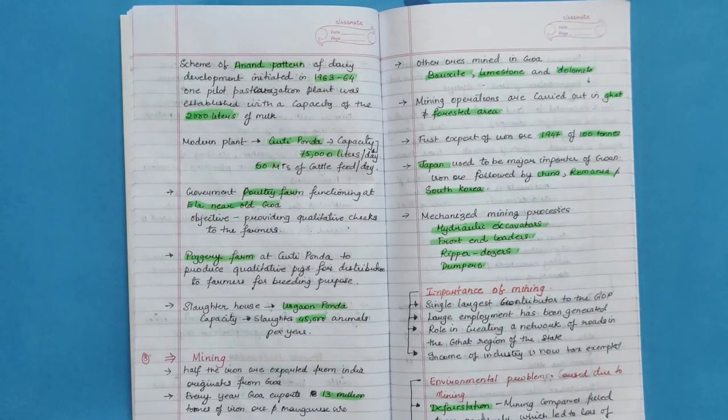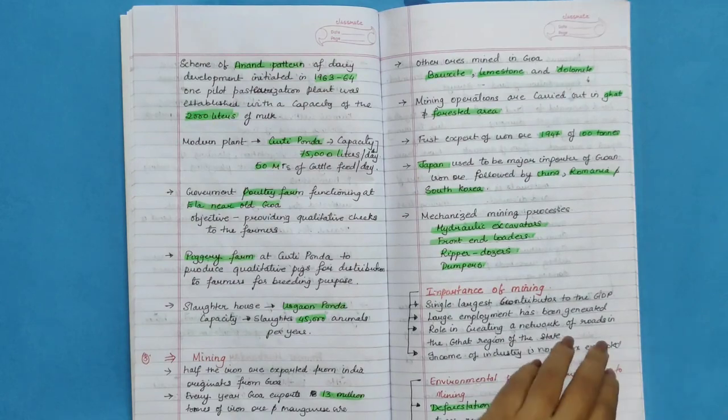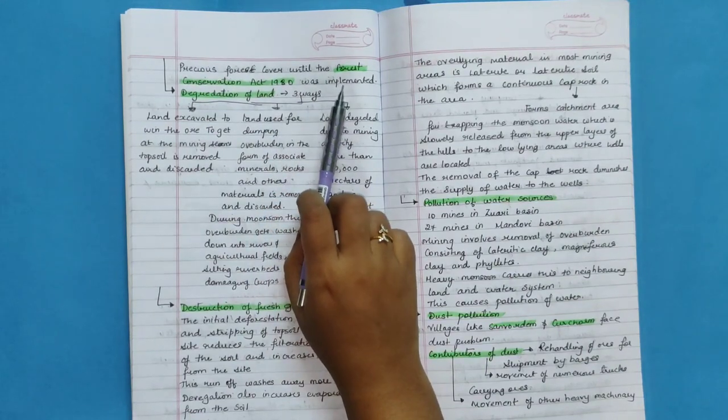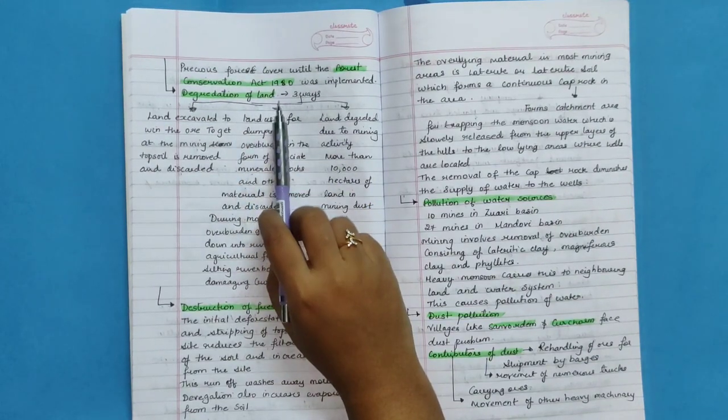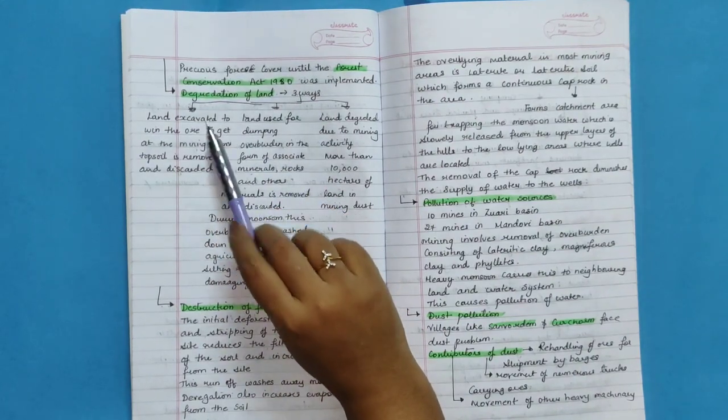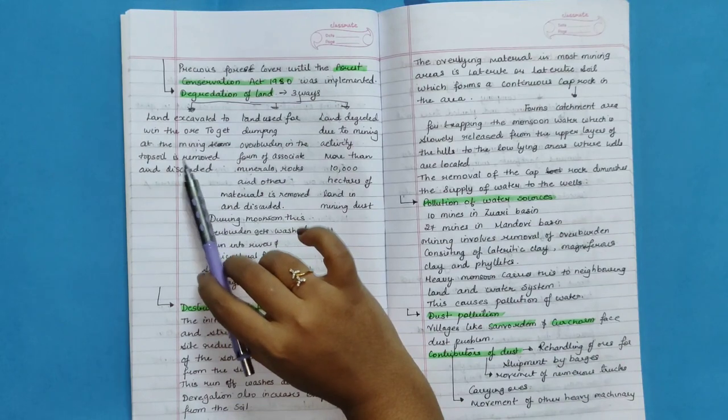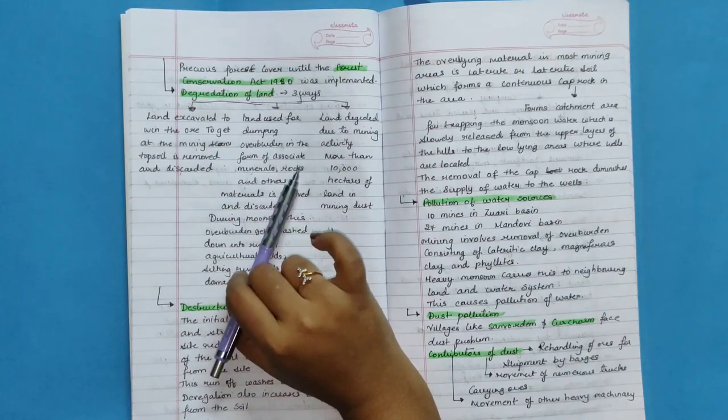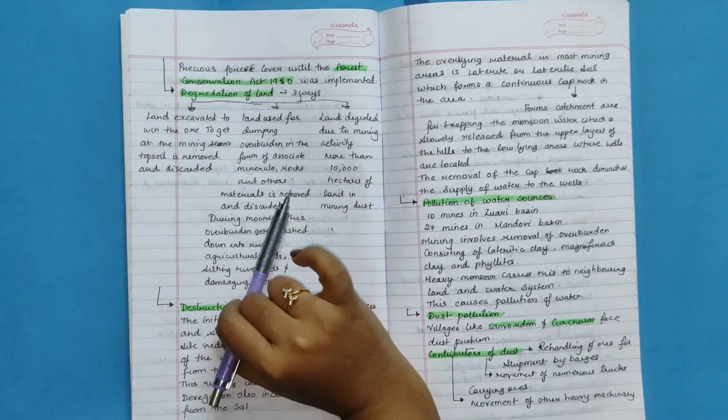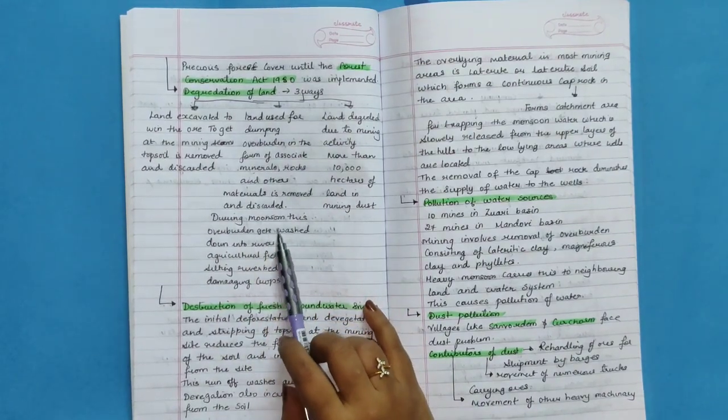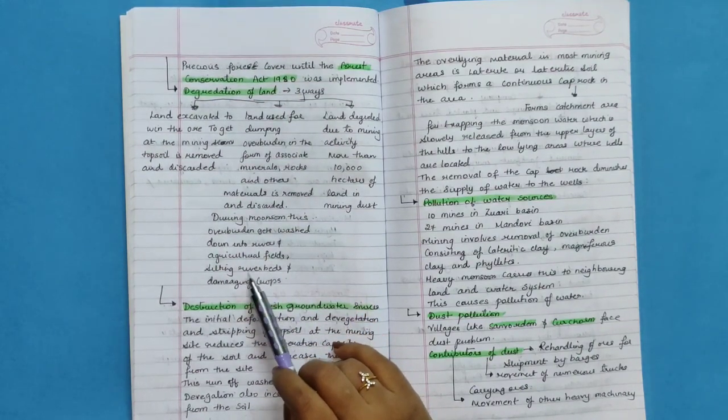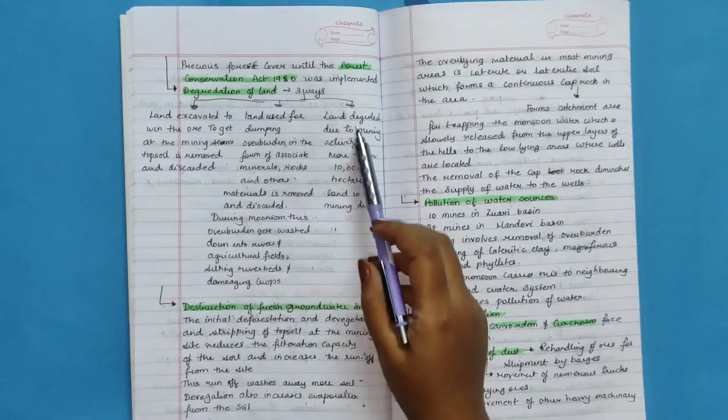Environmental problems caused due to mining. Deforestation. Mining companies felled trees recklessly, which led to loss of precious forest covers until the Forest Conservation Act 1980 was implemented. Second, degradation of land happens in three ways. Land excavated to win the ore. Topsoil is removed and discarded. Land used for dumping overburden in the form of associated minerals, rocks, and other materials is removed and discarded during monsoon. This overburden gets washed down into rivers, agricultural fields, silting river beds, and damaging crops.